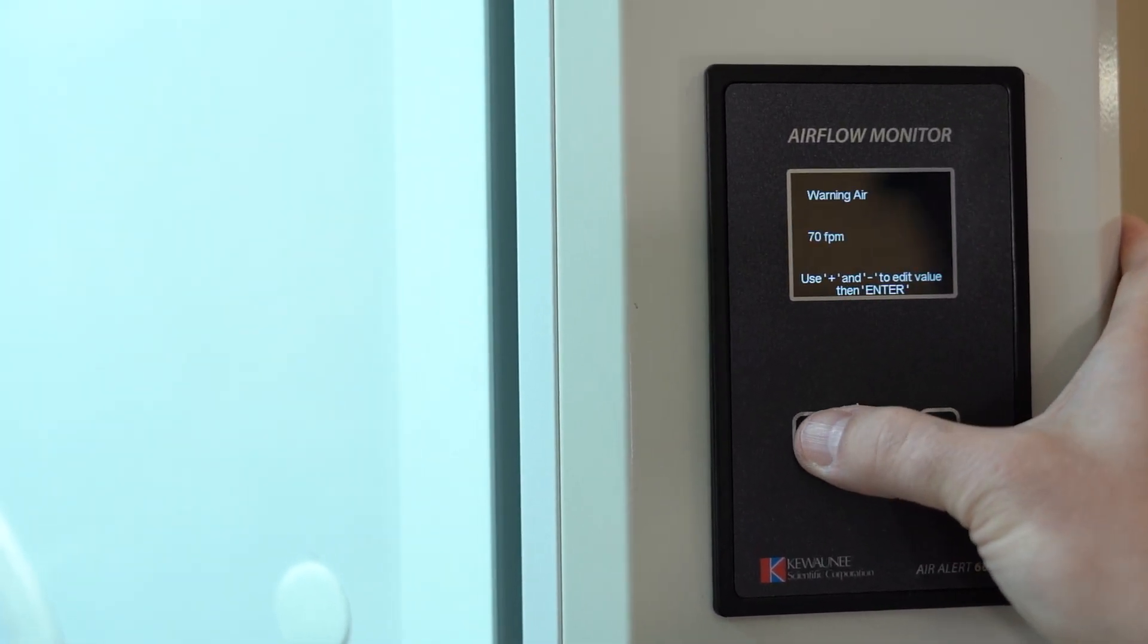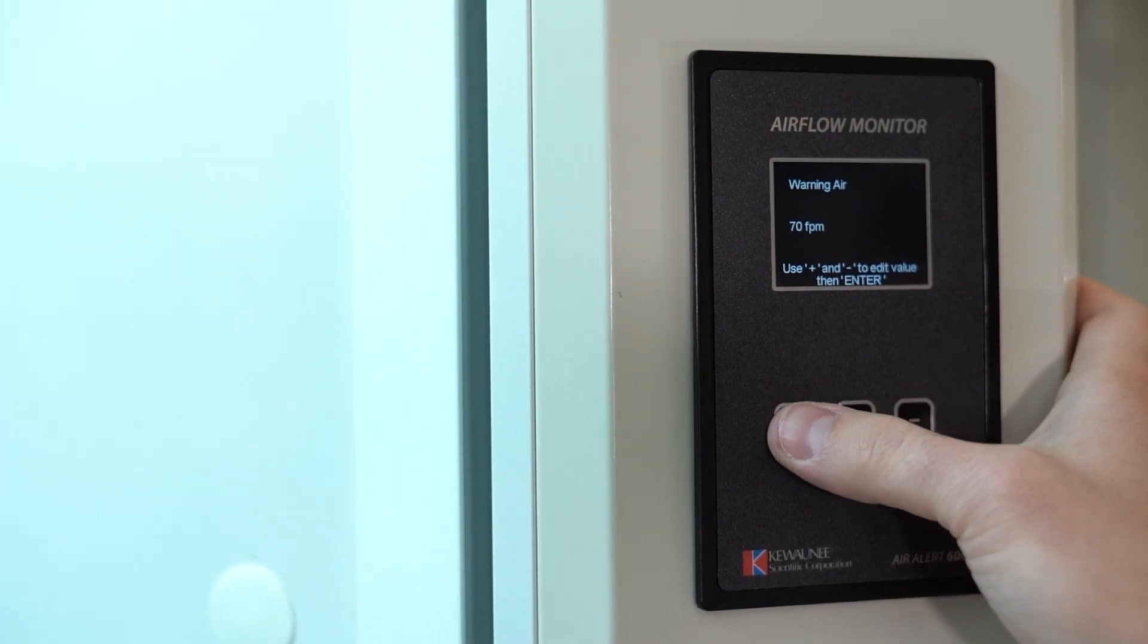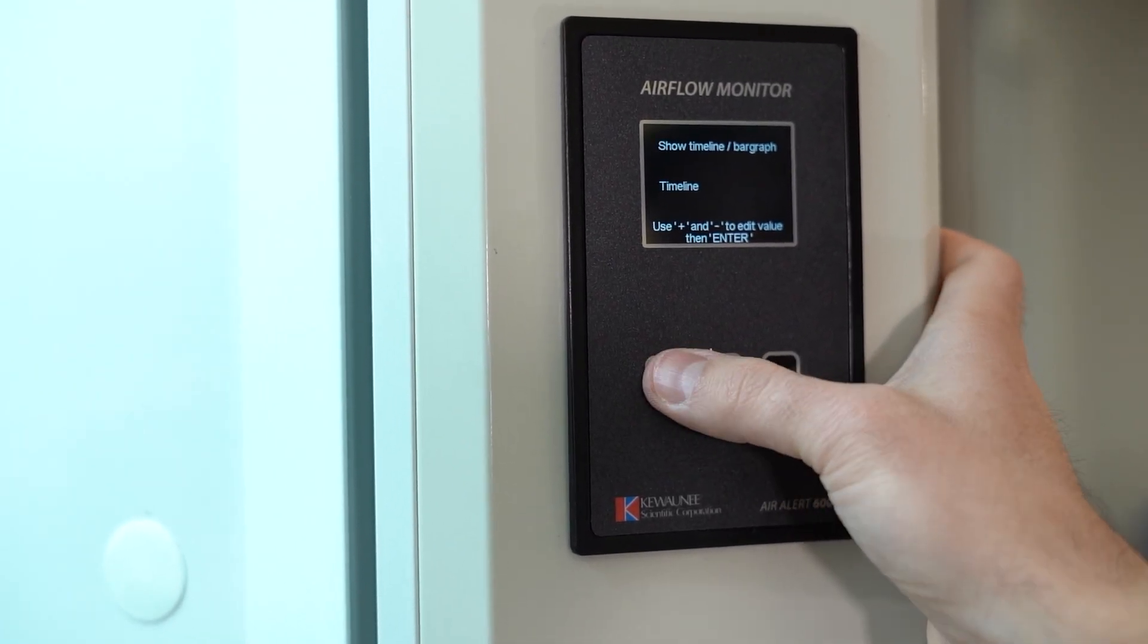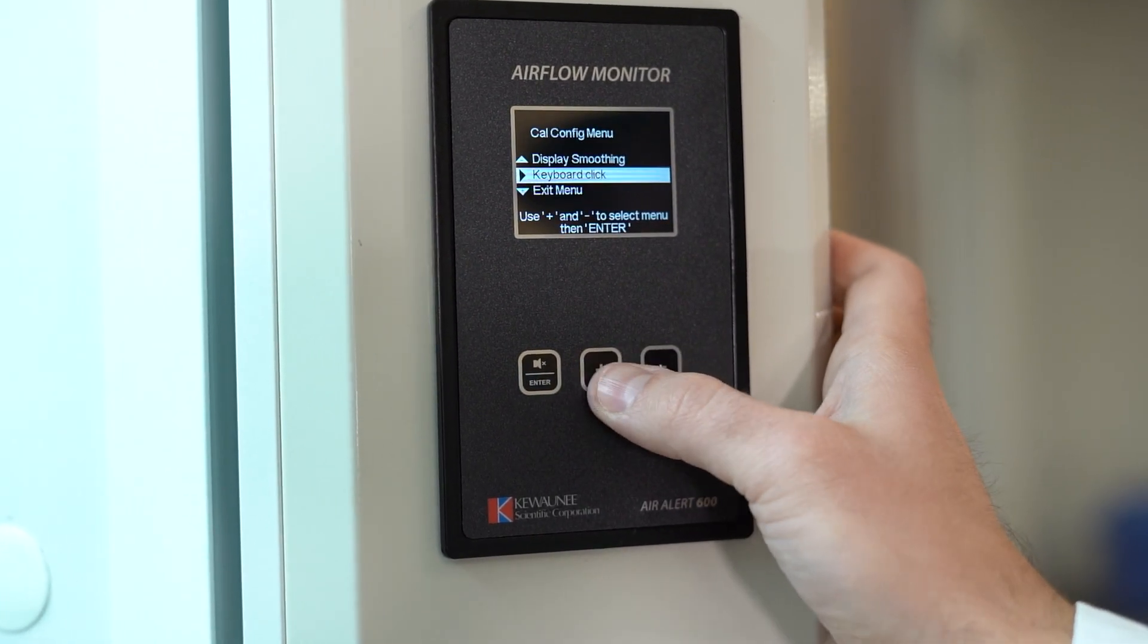Many users find it useful to turn on a timeline of airflow history displayed on the monitor. This setting is called show timeline bar graph. This will show you a quick view of the last hour of airflow values.